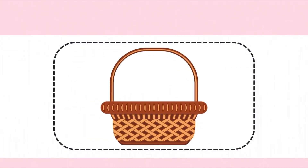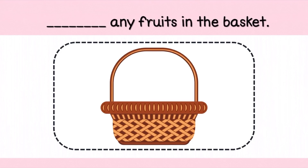ตะกร้าในภาษาอังกฤษออกเสียงว่า Basket ค่ะ ประโยคนี้บอกว่า Any fruits in the basket นักเรียนจะเติม There isn't หรือว่า There aren't? เราจะเติม There aren't ค่ะ จะได้เป็น There aren't any fruits in the basket แปลว่า ไม่มีผลไม้อยู่ในตะกร้าเลย